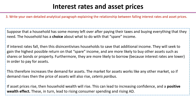Next, we've asked you to write your own detailed analytical paragraph explaining the relationship between falling interest rates and asset prices. Hopefully you found this relatively straightforward because we were reversing the analysis. Households are more likely to borrow because interest rates are lower in order to pay for assets. Therefore, the demand for assets rises and the market for assets works like any other market — the price of assets rises and the equilibrium quantity rises. If asset prices rise, then household wealth will rise. This leads to increasing confidence because we've had a positive wealth effect. If your assets rise in value, you feel wealthier. This in turn leads to a rise in consumer spending and rising aggregate demand.